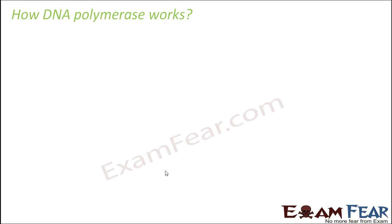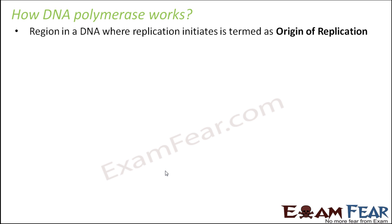How does DNA polymerase work? We will understand the working of DNA polymerase and the process of DNA replication step by step. First of all, we have to understand that the process of replication cannot start anywhere in DNA. The specific region in a DNA where the process of replication initiates is known as the origin of replication. It is the point from where the DNA strands start separating from each other. In semi-conservative mode of DNA replication, the two strands of DNA separate out, and then copies are created based on each of those strands which act as template strands. The region from where it starts is known as the origin of replication, and it occurs at certain specific points.